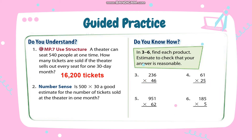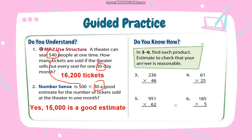Next question, number 2. Is 500 multiplied by 300 a good estimate for the number of tickets sold at the theater in one month? From 540, if you round, it becomes 500, and 30 stays the same. 500 multiplied by 30 is 15,000, and 15,000 is a good estimate because it is close to 16,200.